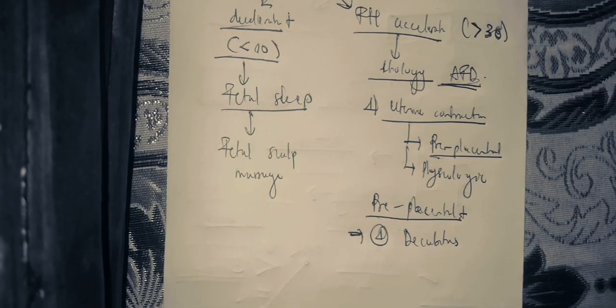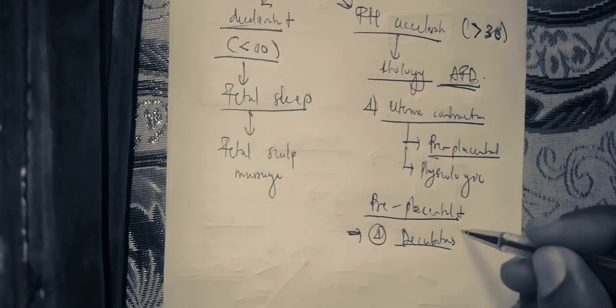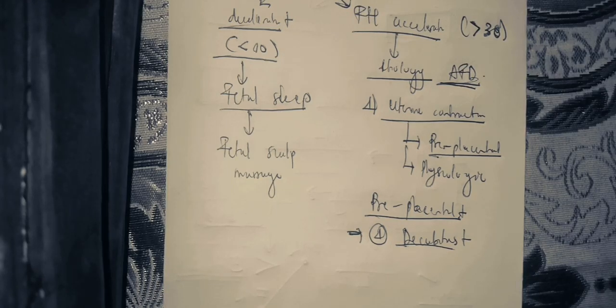When you have a woman in labor, you ask her to sleep in the lateral decubitus position, particularly the left lateral decubitus. Because when she is in dorsal decubitus, the uterus compresses the inferior vena cava, which reduces the venous return and reduces the cardiac output. When you have a reduction in cardiac output, the child is in distress because of reduced perfusion of the uterus.